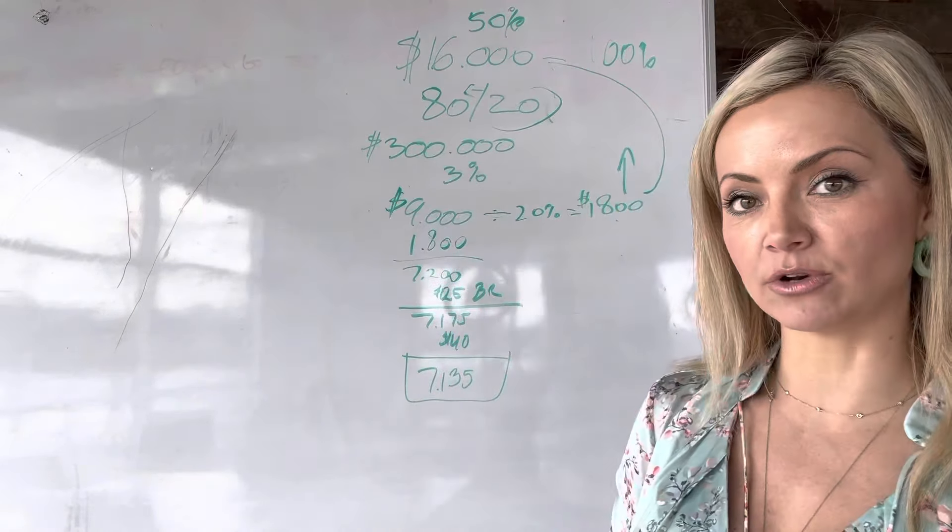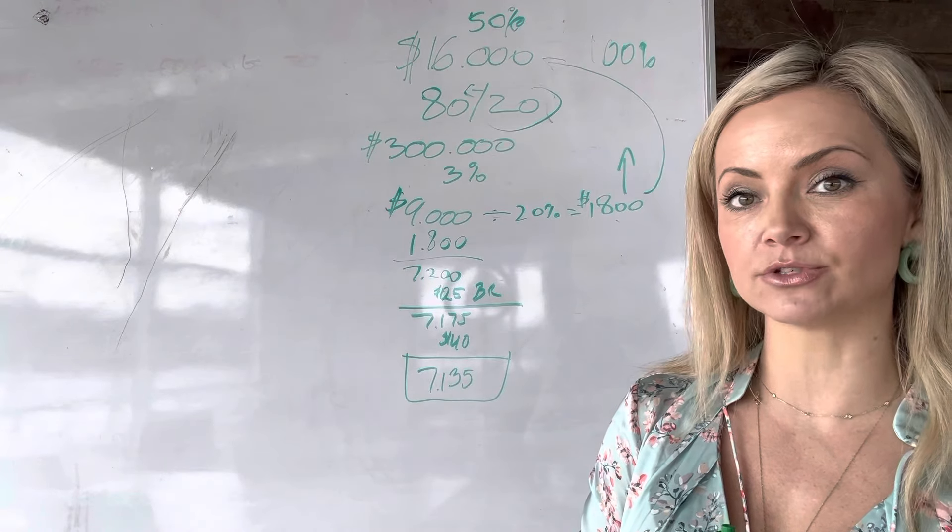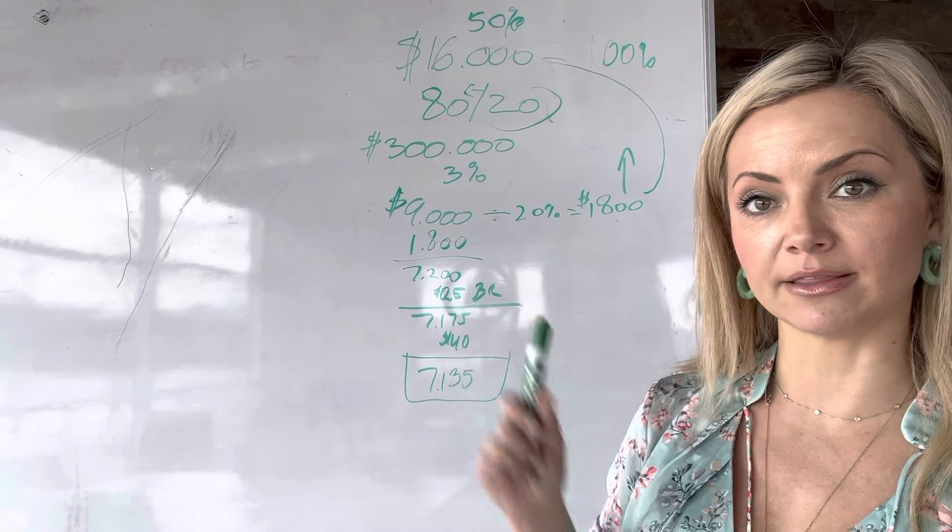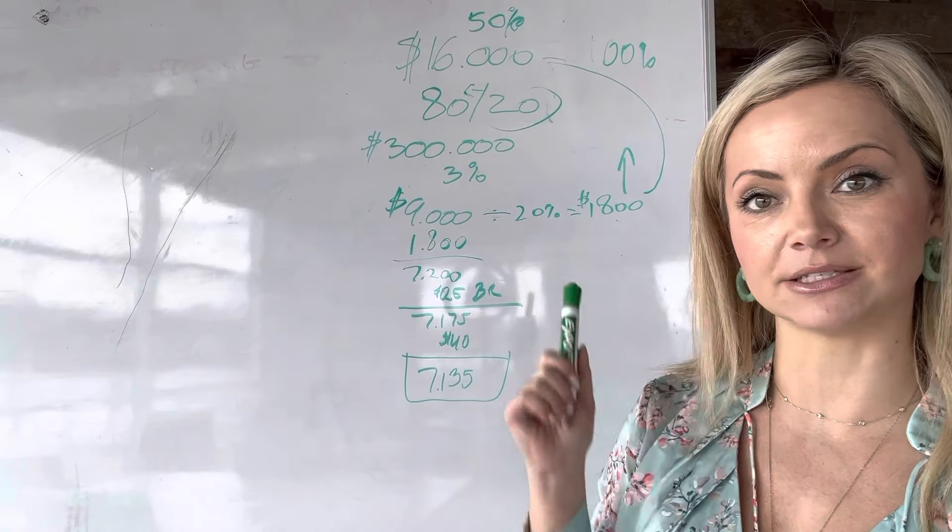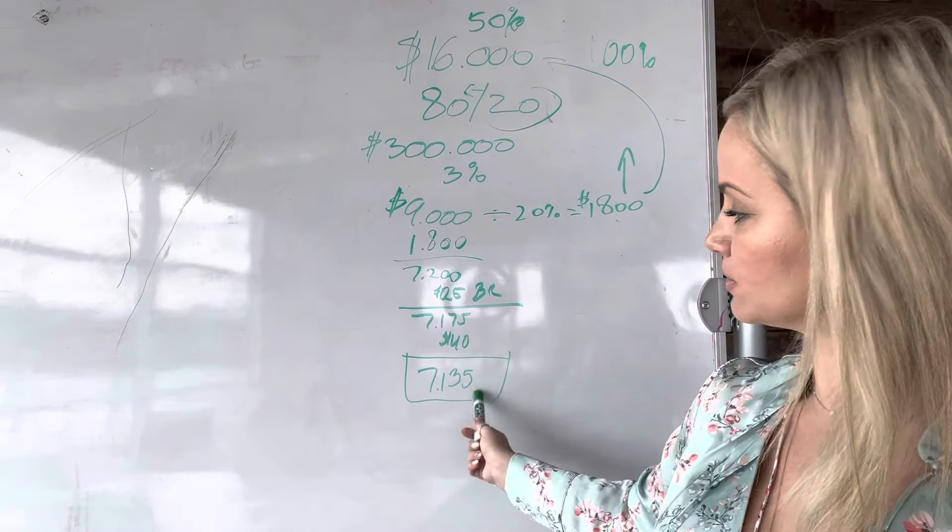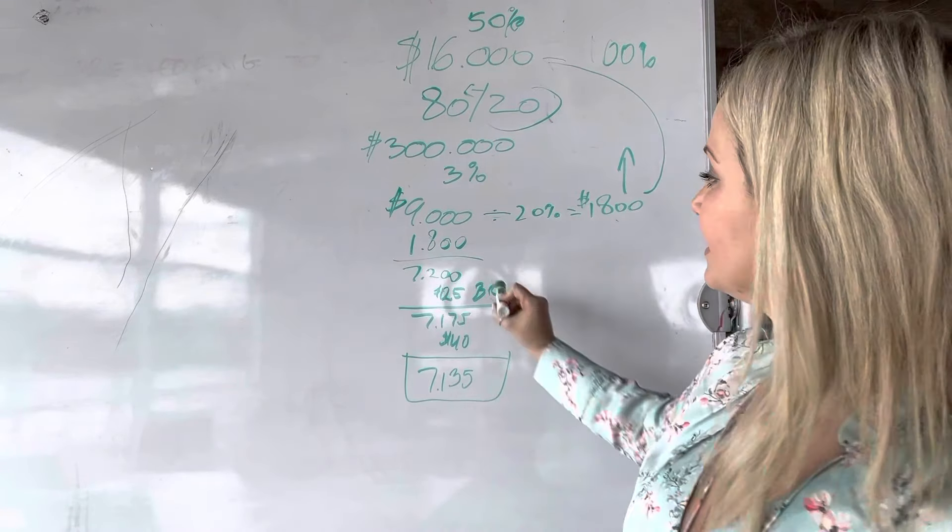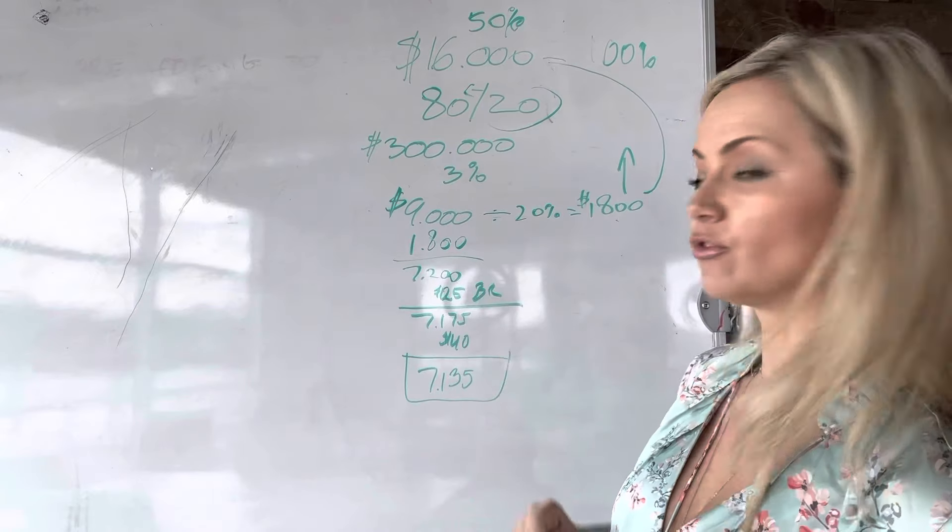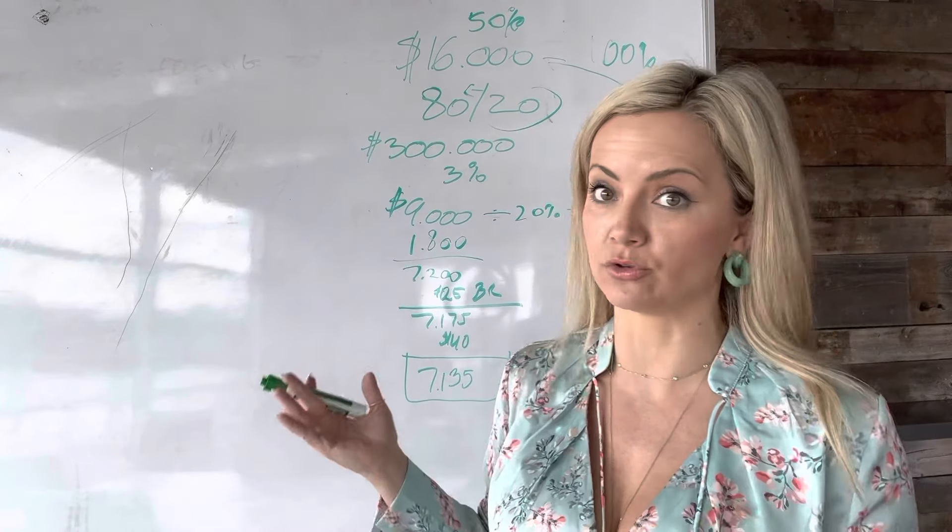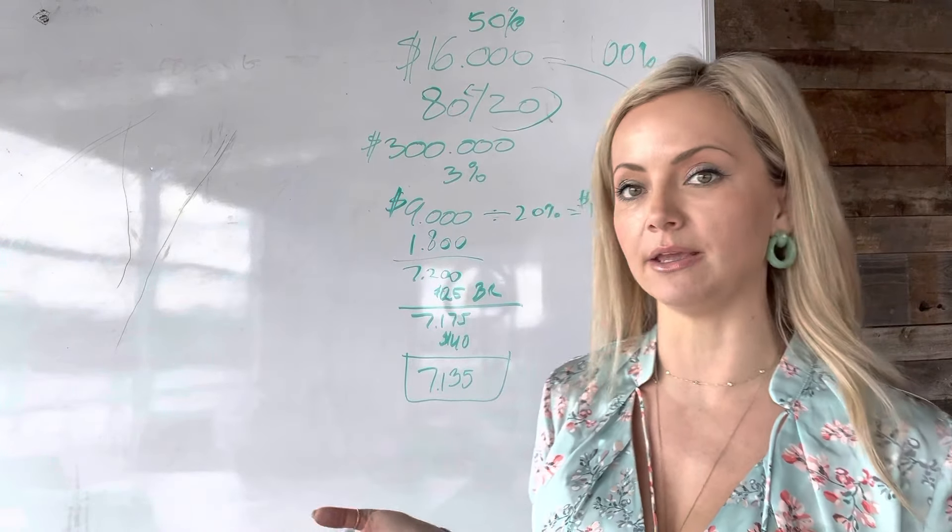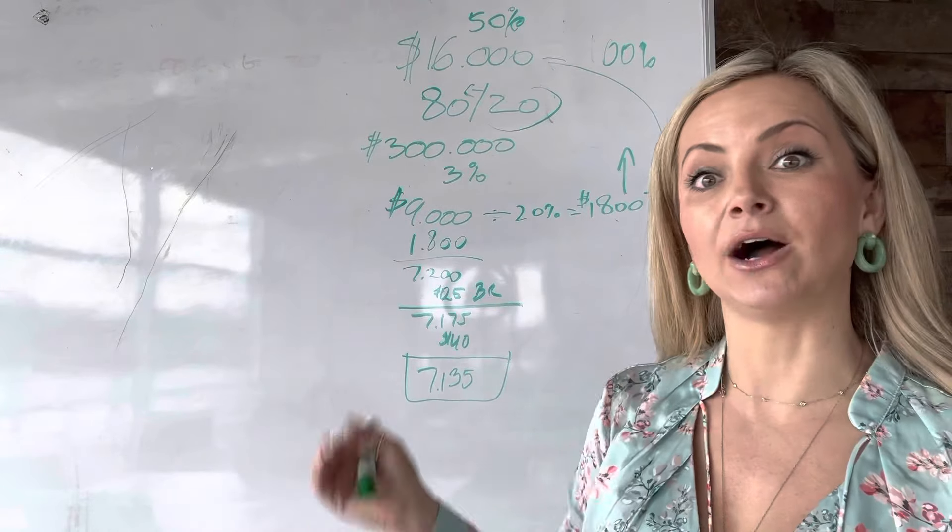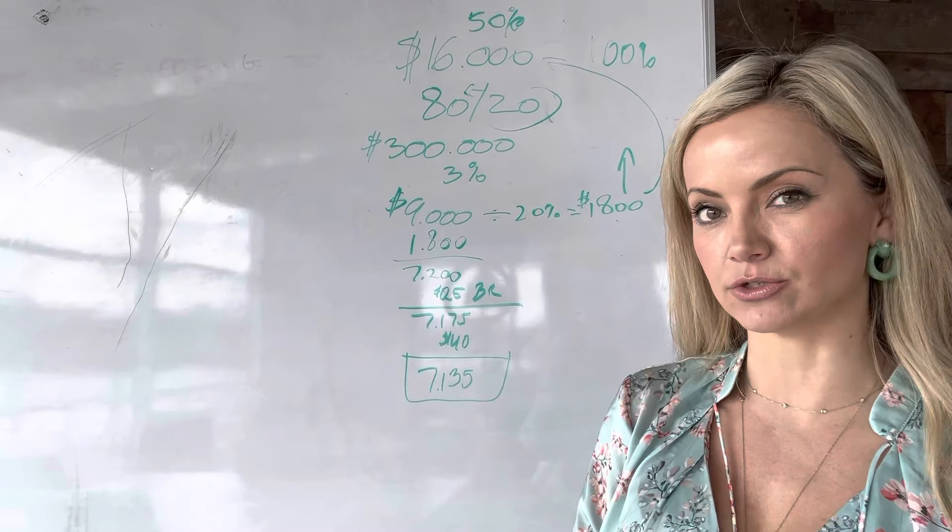But these are approximately your numbers if you sell a $300,000 house, collect a 3% commission, $9,000, pay 20% to the broker at a $16,000 cap. Approximately, this is what you take home at my brokerage. Now these fees, this $25 and a $40, it's a little different for you if you don't join EXP. I don't know what your fees are going to be. So calculate those fees out of your commission. Talk to you soon.